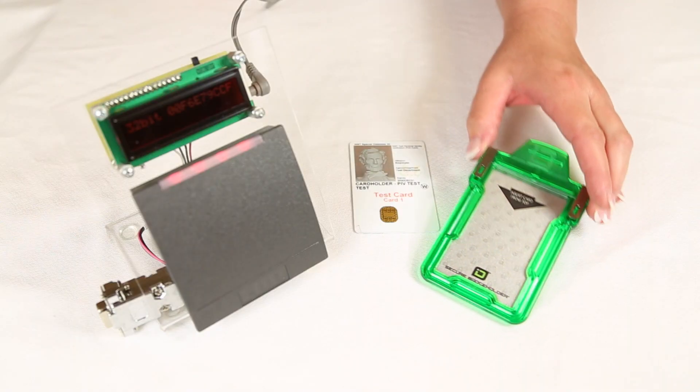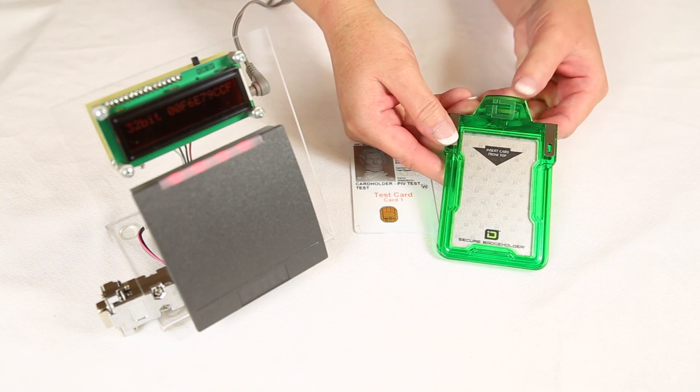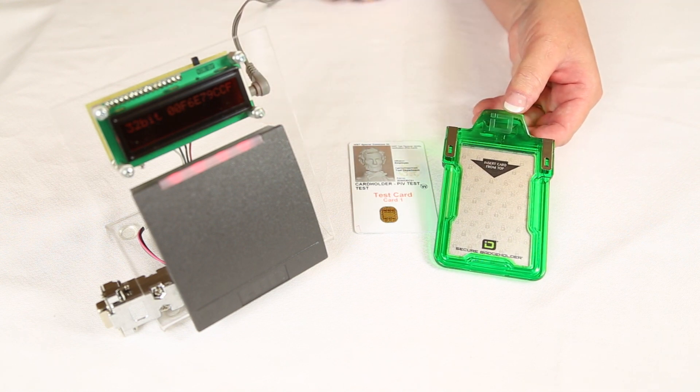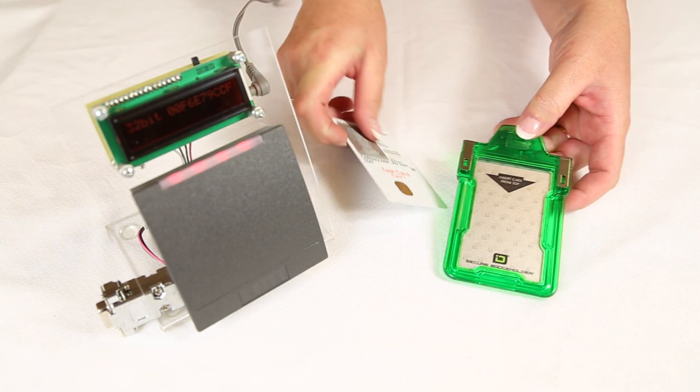Our secure badge holder classic is made with the highest quality polycarbonate plastic with stainless steel clips. It's designed to stand up to harsh environments including saltwater environments.